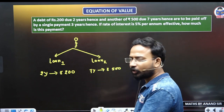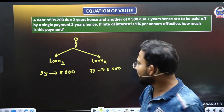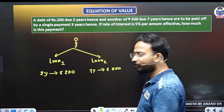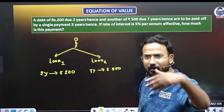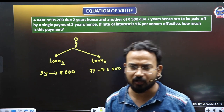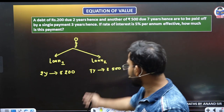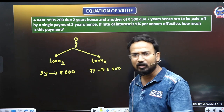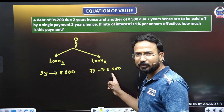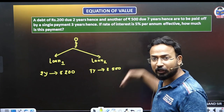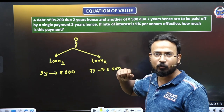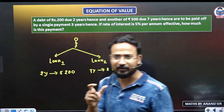So the question is: how many rupees would I have to pay at the end of three years? You might say 200 plus 500 equals 700 rupees, but it is not like that. If I have to pay 200 rupees due in two years, interest will also come for one extra year. And if I have to pay 500 rupees due in seven years, I am paying four years early — I will get the present value for four years.